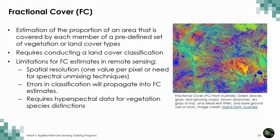Another variable that can be included in SDMs is fractional cover, which refers to estimating the proportion of an area covered by each member of a predefined set of vegetation or land cover types. For mapping fractional cover, the proportions of the different classes will sum to one. Fractional cover estimation requires that a land cover map is created ahead of time, and the output is an estimate of the proportion of each class for each pixel. This provides insight into ecosystem structure, links to species movements, and for mapping the extent of invasive species.